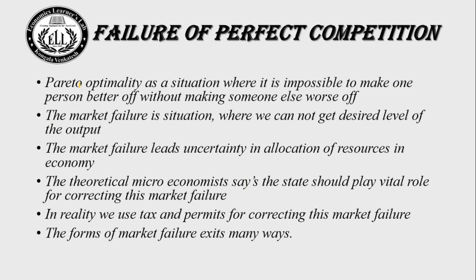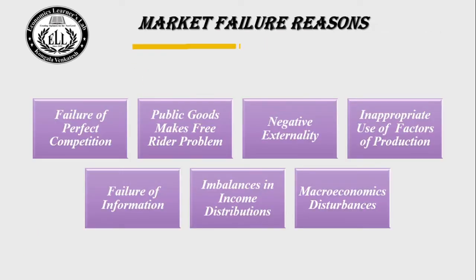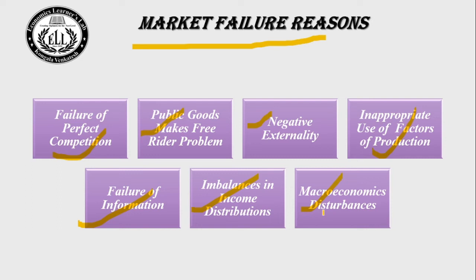The reasons for market failure are seven: First, failure of perfect competition — imperfect competition leads to market failure. Second, public goods create a free rider problem, which can lead to market failure. Third, negative externalities. Fourth, inappropriate allocation of factors of production. Fifth, failure of information — asymmetric information between two parties. Sixth, imbalances in income conditions — inequality in income distribution. Seventh, macroeconomic disturbances like inflation and interest rates.